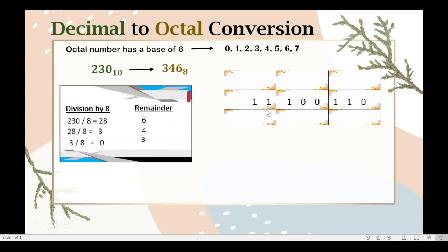After grouping the 3 binary digits, we are going to use the equivalent value of the power of 2 — or the weight of the power of 2 — as our index. So we have the equivalent value of 2 to the 0 power, which is 1; the equivalent value of 2 to the 1 power, which is 2; and the equivalent value of 2 to the 2 power, which is 4. In our second group of 3 binary digits, we also have 1, 2, and 4. So this serves as our index.